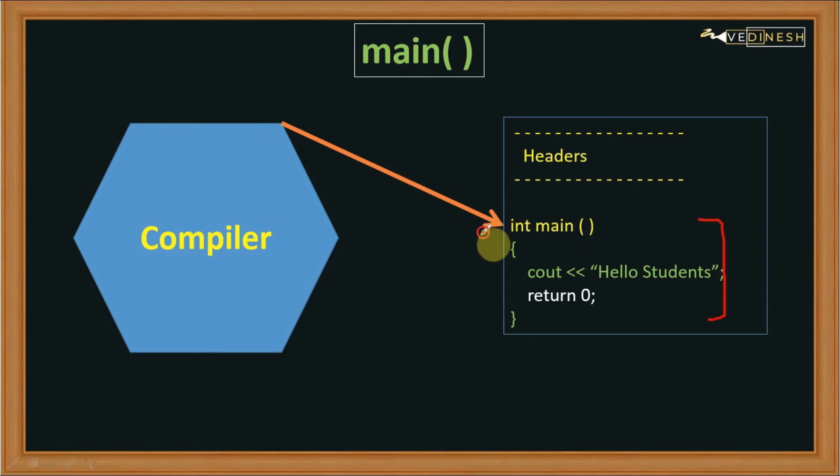Now after executing everything, your compiler will return from the main function with the help of this keyword, that is return. Please note that if you commit some mistake inside the main function,